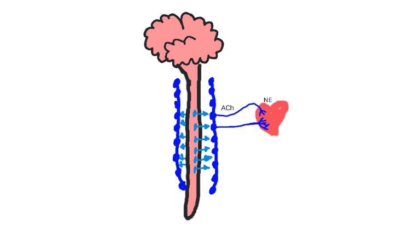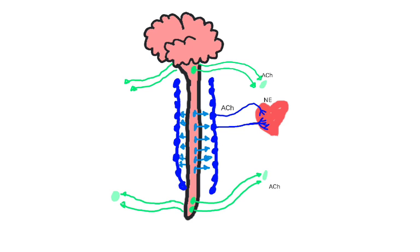The preganglionic fibers of the parasympathetic nervous system exit the brainstem and sacral areas of the spinal cord and connect to distant ganglia. Here they release acetylcholine, which binds to nicotinic acetylcholine receptors on the postganglionic cells.